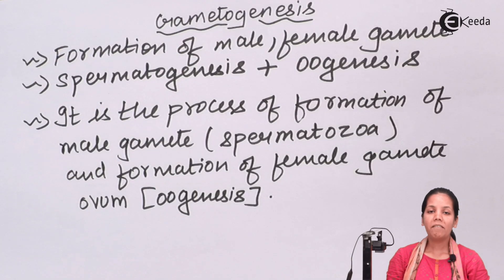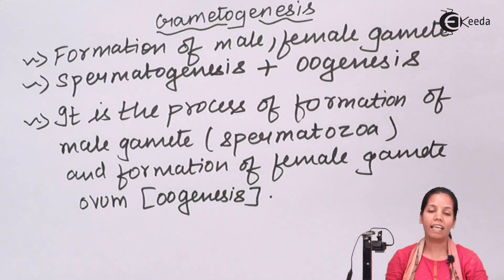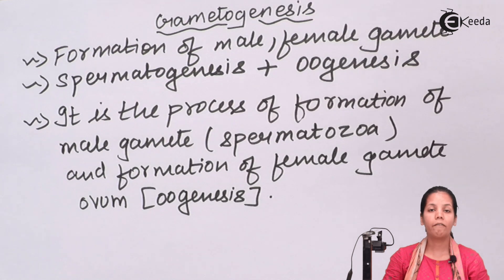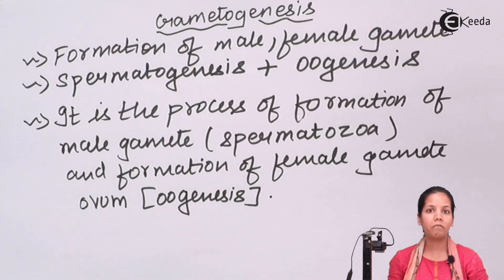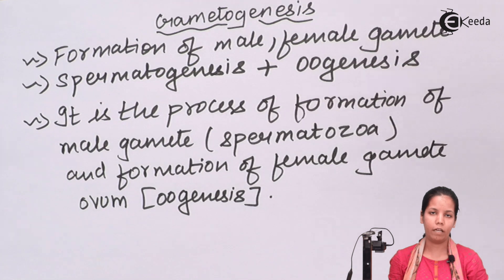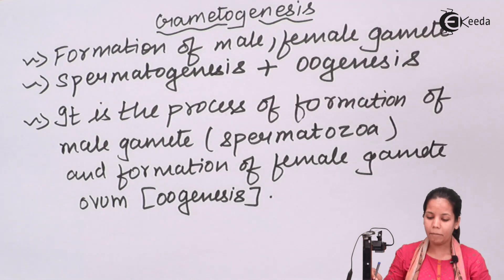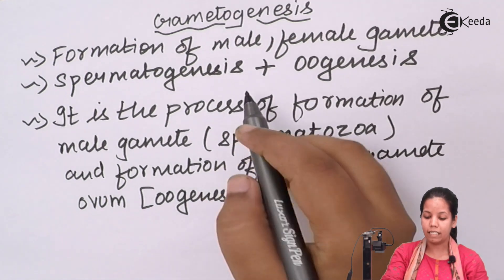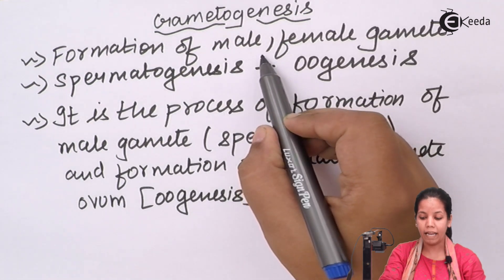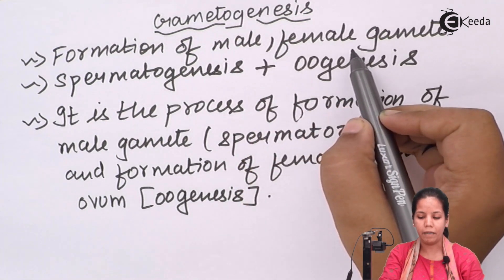Whenever male and female gametes are formed, it is termed as gametogenesis. We all know the male gamete is formed inside the male whereas the female gamete is formed inside the female. There are different organs involved in each. So gametogenesis is nothing but the formation of male and female gametes.